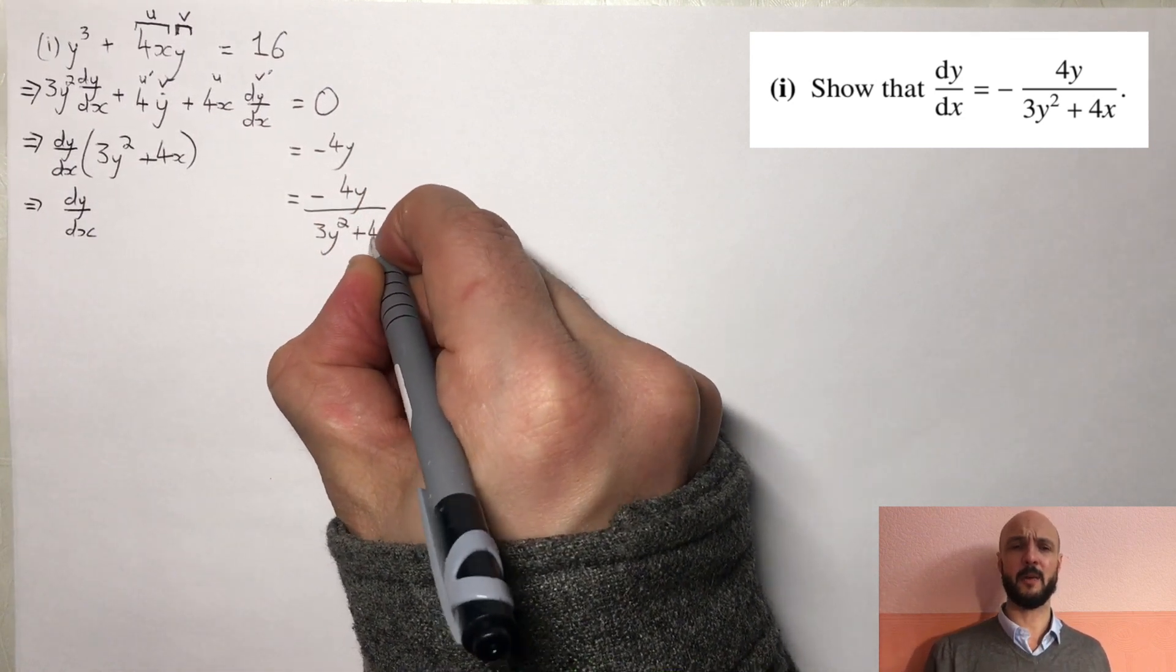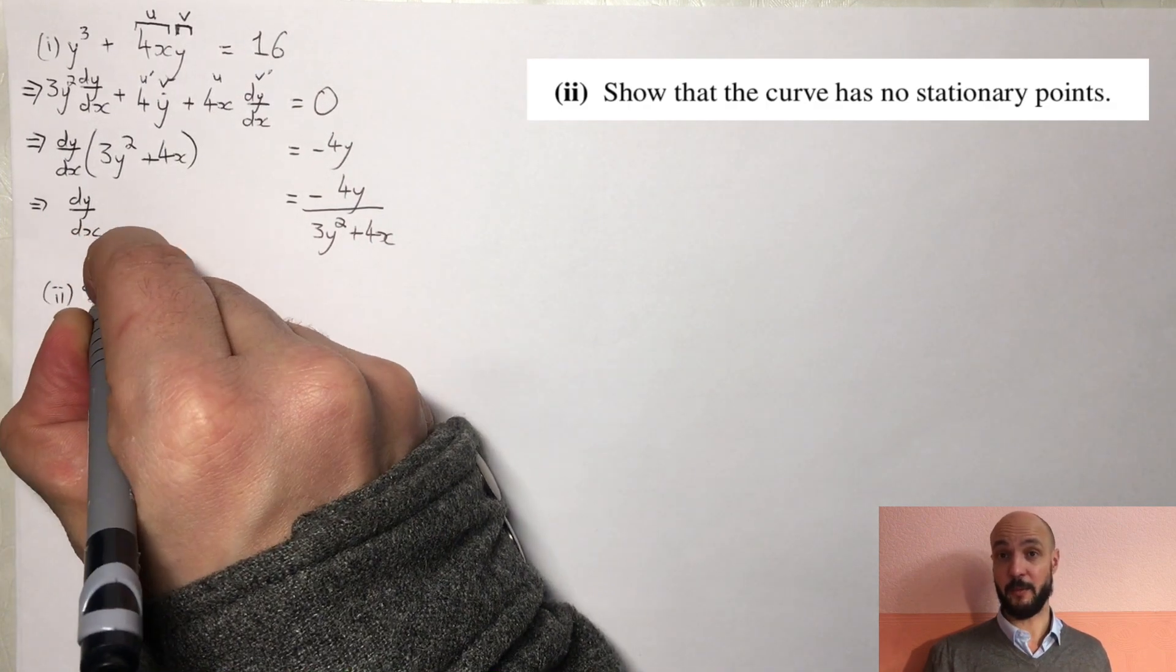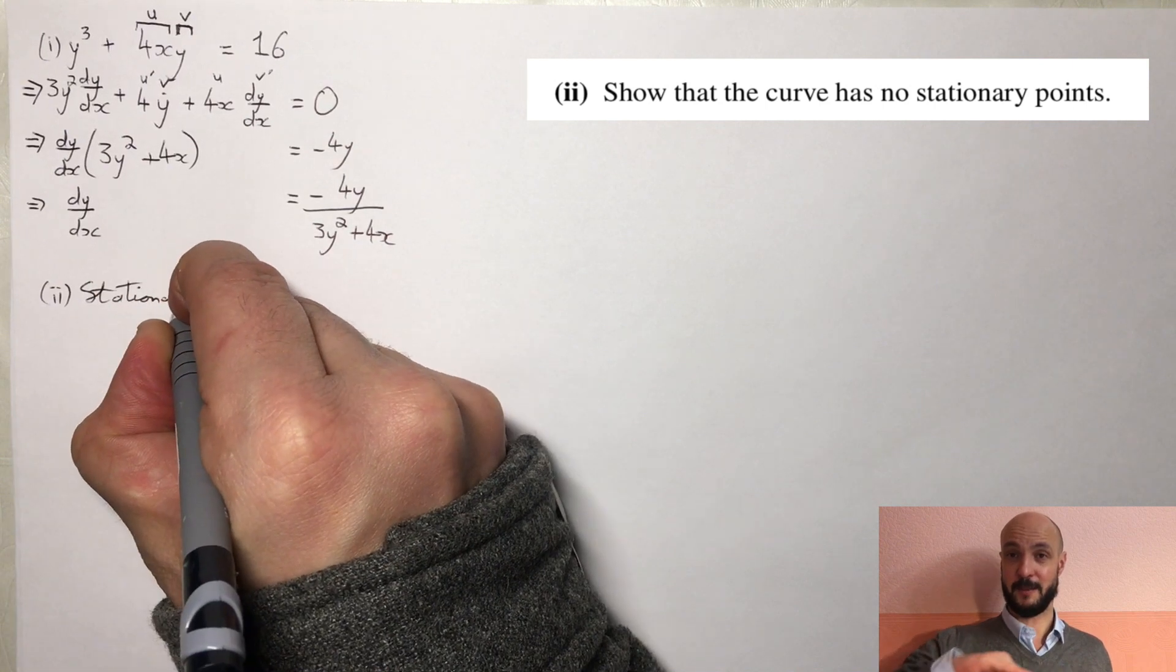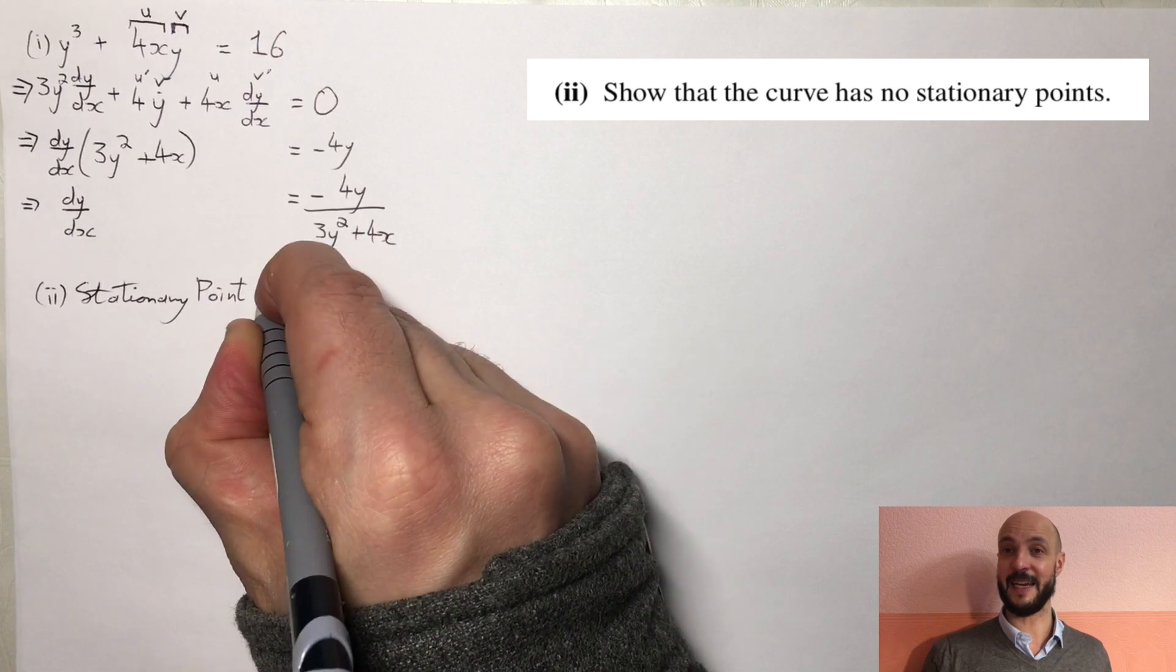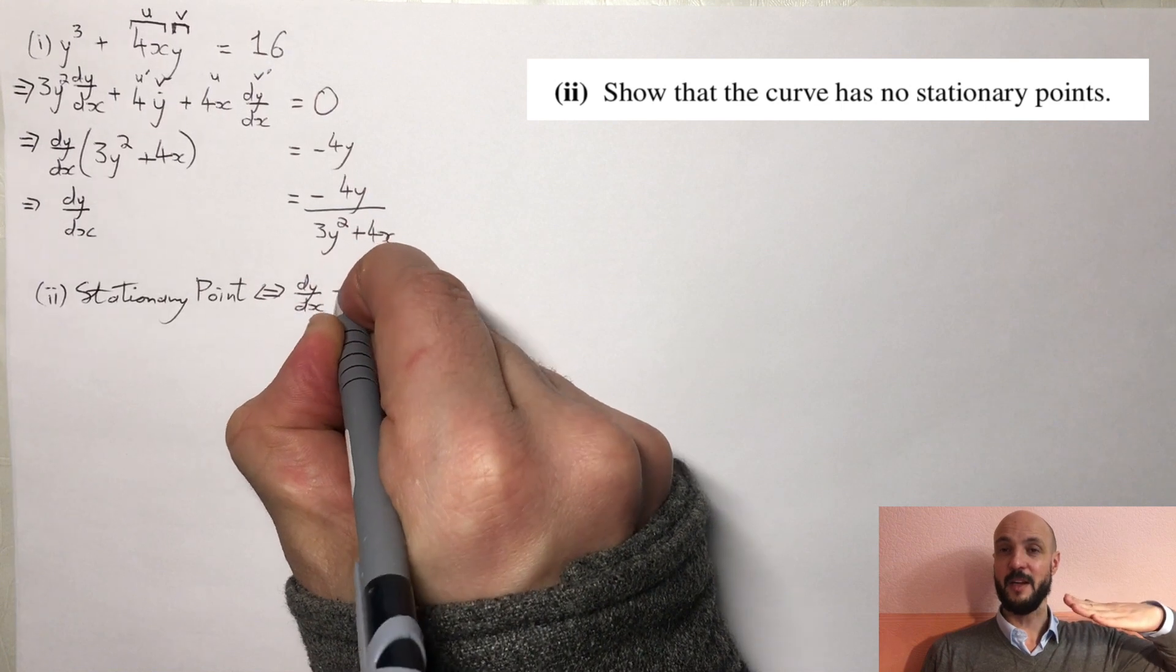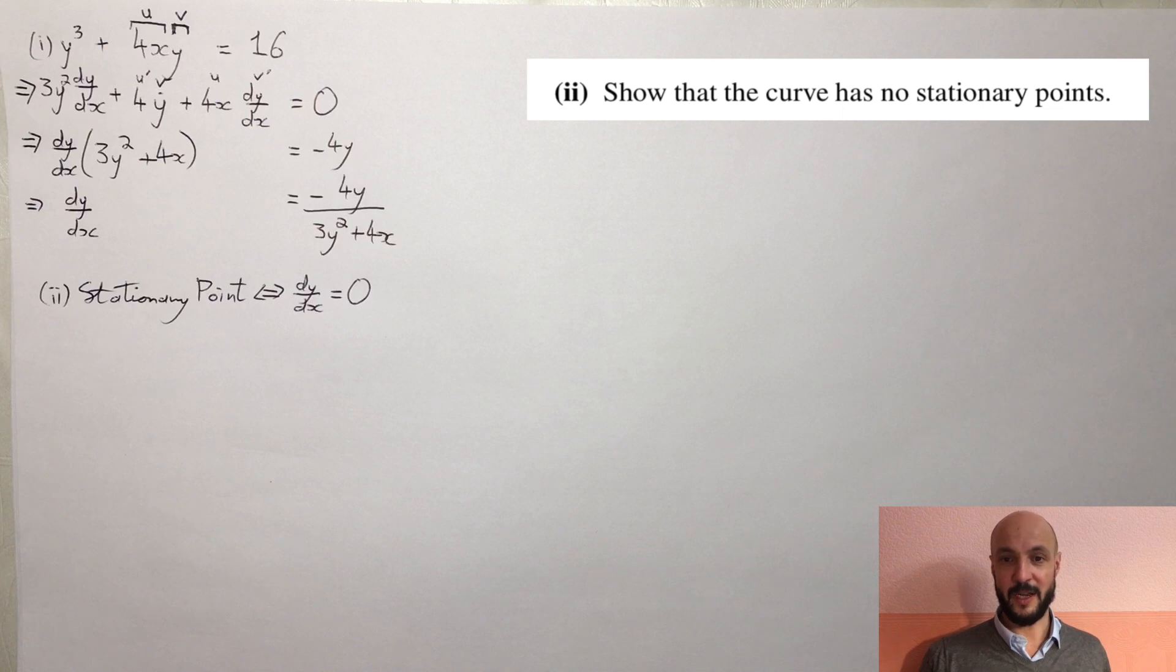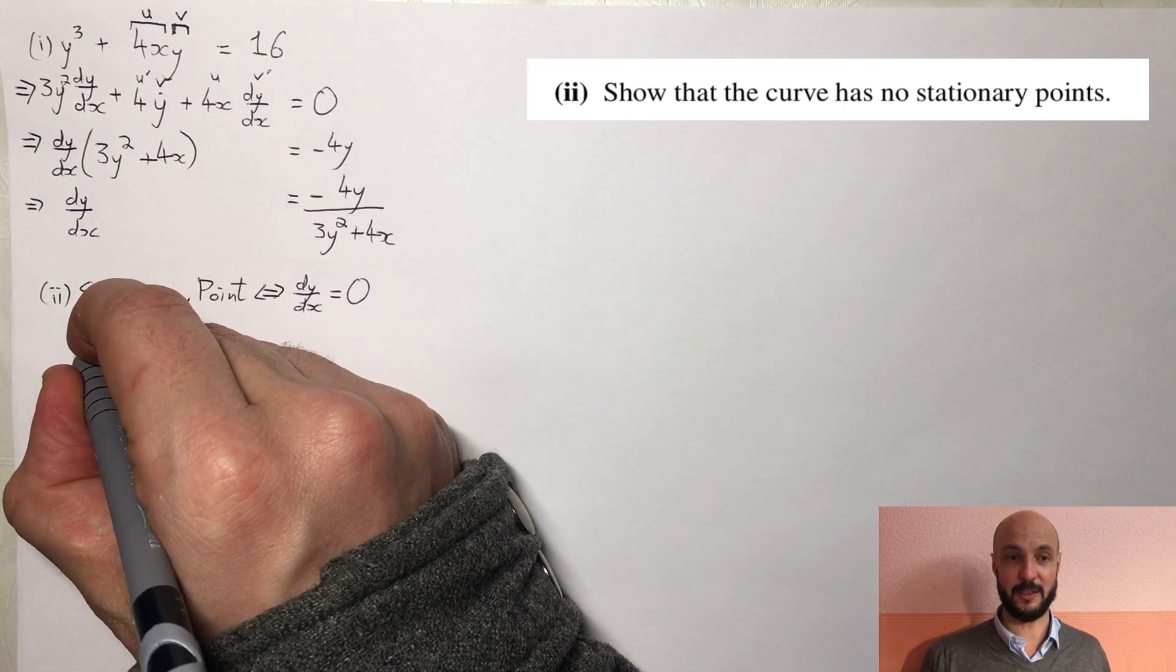So the second part we want to show there's no stationary points. Well we know at a stationary point, either a turning point or a point of inflection, that's where dy/dx equals 0 because dy/dx of course is the gradient. So if the gradient equals 0 then we're not increasing and we're not decreasing.